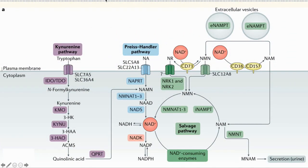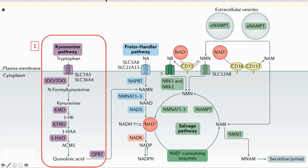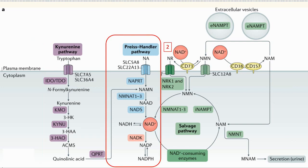First, a little background on how NAD is made. Here are the main pathways. Number one is when it is made from tryptophan, an amino acid. This does not seem to be a large source of NAD, and the genes which enable this pathway are mostly expressed in the liver. Number two is the Preiss-Handler pathway, which takes nicotinic acid — NA in this diagram — from our diet and creates NAD.